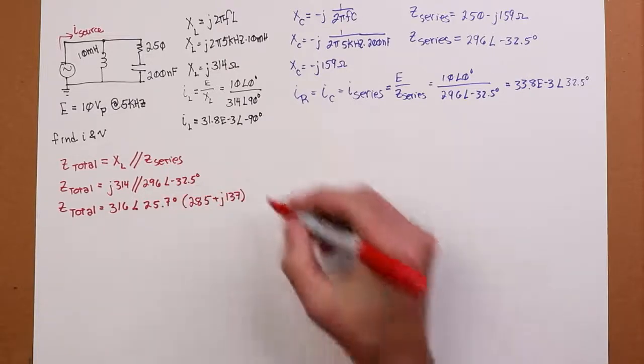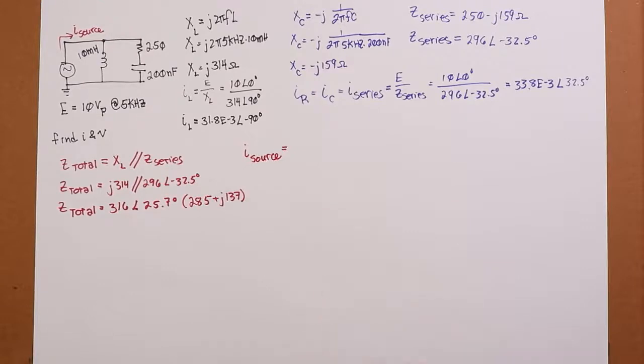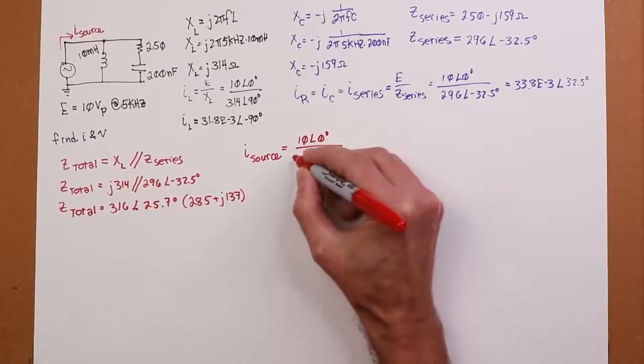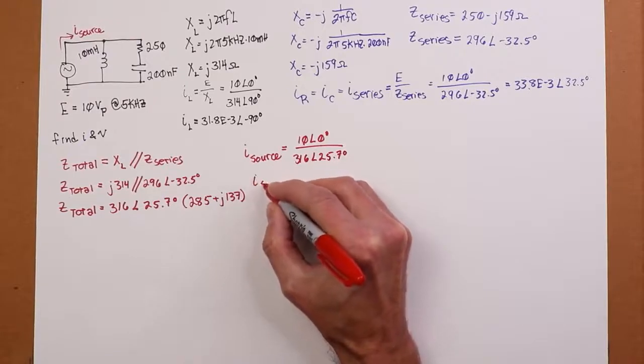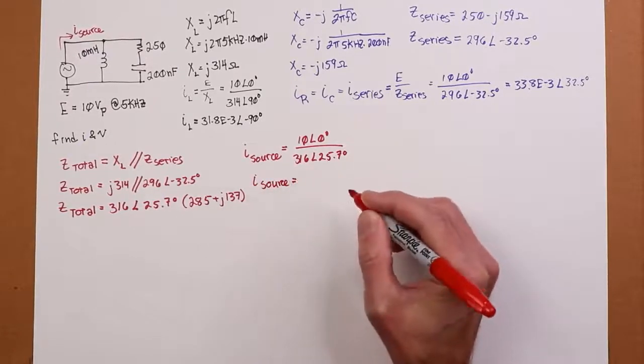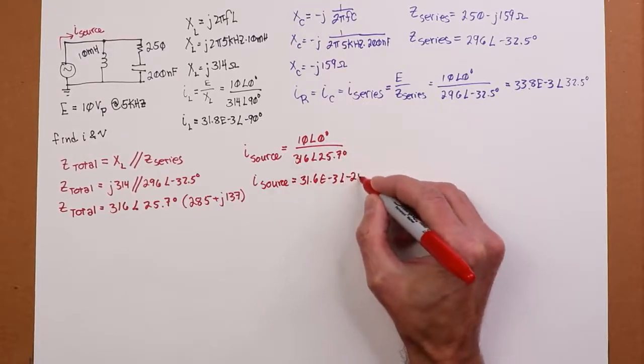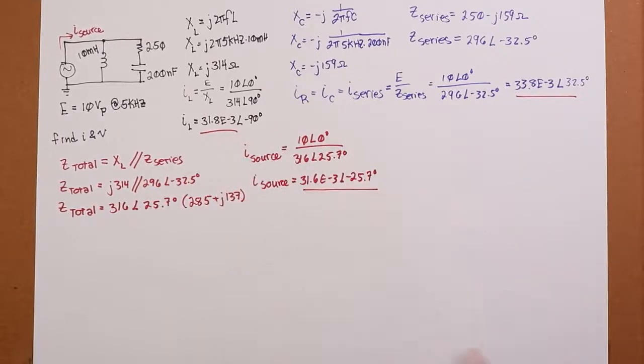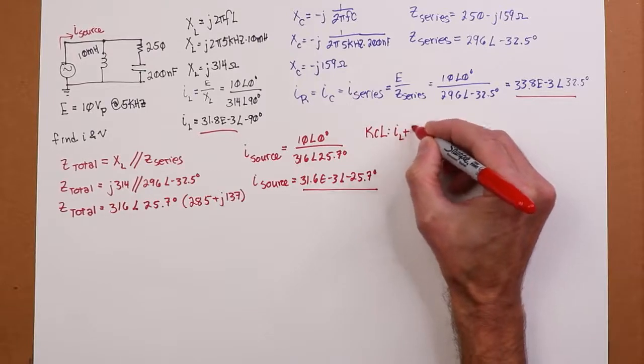So Z total is the J314 or 314 at 90 in parallel with the 296 sitting at negative 32.5. That turns out to be, now you could just do product sum rule on that if you wanted to, but that turns out to be 316 at an angle of 25.7 degrees. So the circuit is inductive. And if you break this apart, if you say what is this in rectangular form? This is equivalent to 285 plus J137.